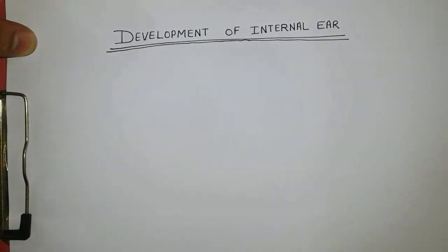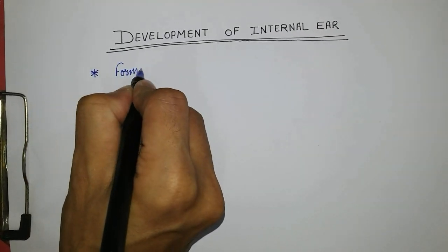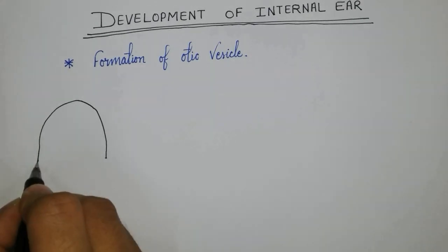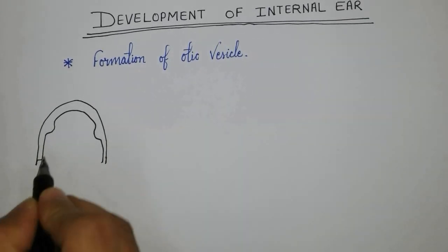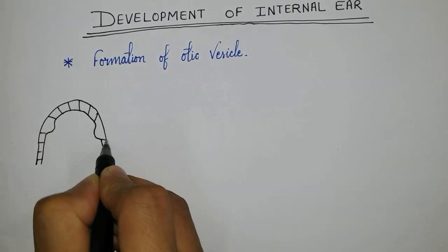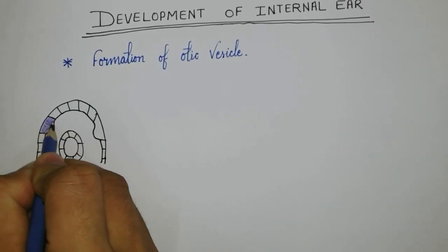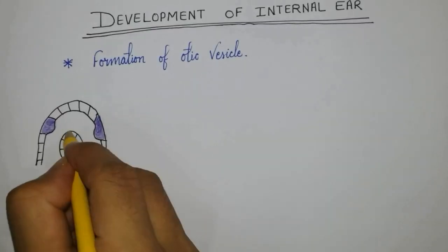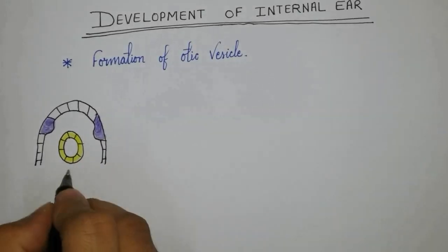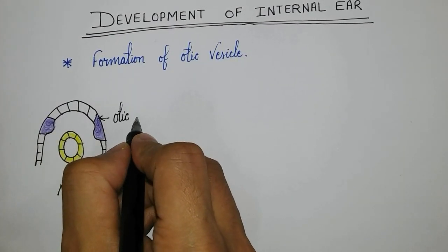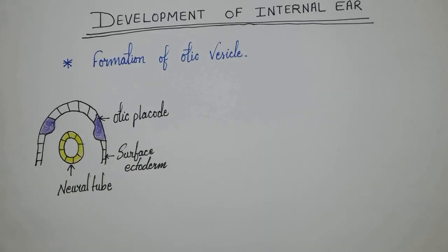Development begins in the fourth week of intrauterine life. We will now see the formation of the otic vesicle with a simple diagram. This is the surface ectoderm, and this one in blue color is the neural tube. The surface ectoderm on either side of the mesencephalon shows a localized thickening called the otic placode.